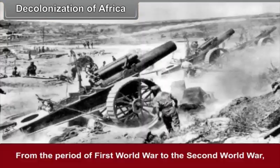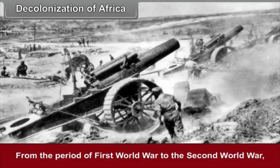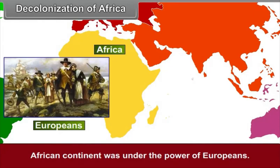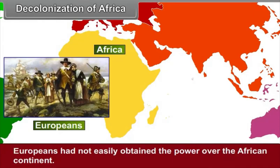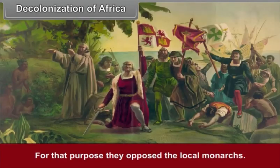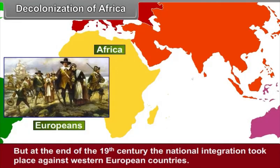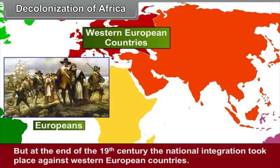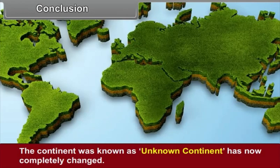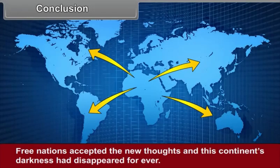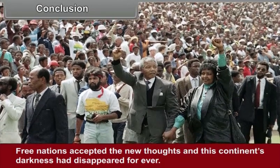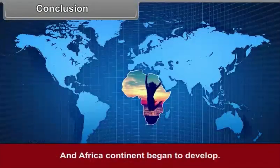Regarding decolonization of Africa, from the First World War to the Second World War, the African continent was under the power of Europeans. Europeans had not easily obtained power over Africa — for that purpose, they opposed local monarchs. But by the end of the 19th century, national integration took place against Western European countries. In conclusion, the continent once known as unknown has now completely changed. Free nations accepted new thoughts and the continent's darkness disappeared forever, as Africa began to develop.